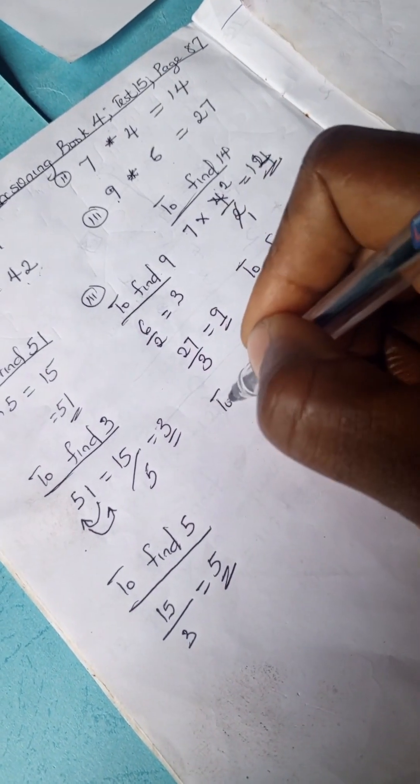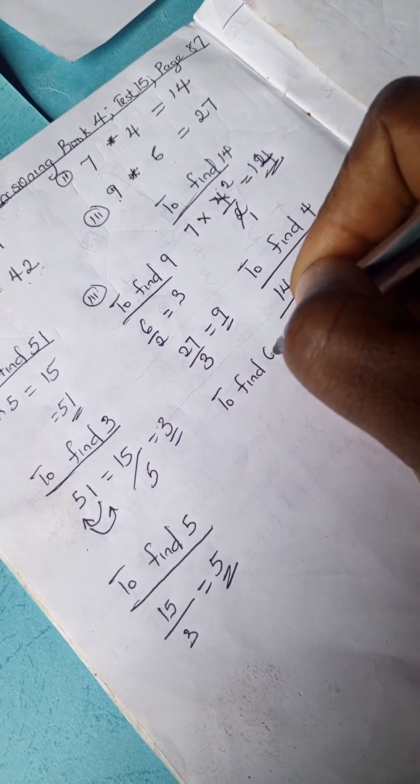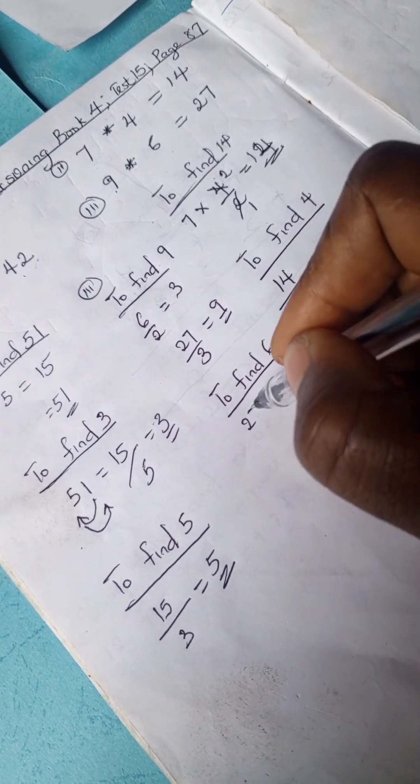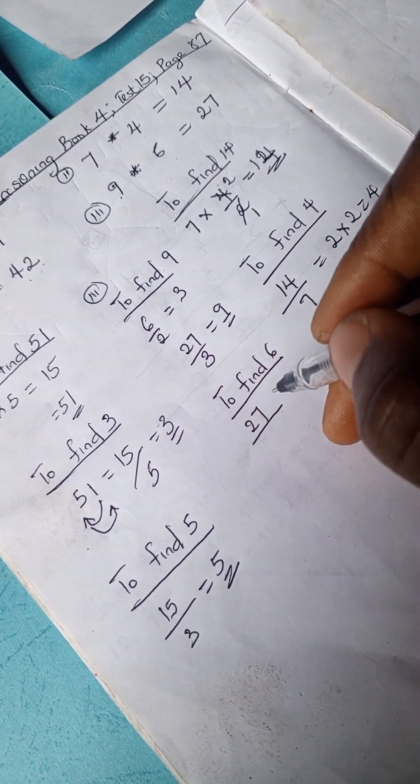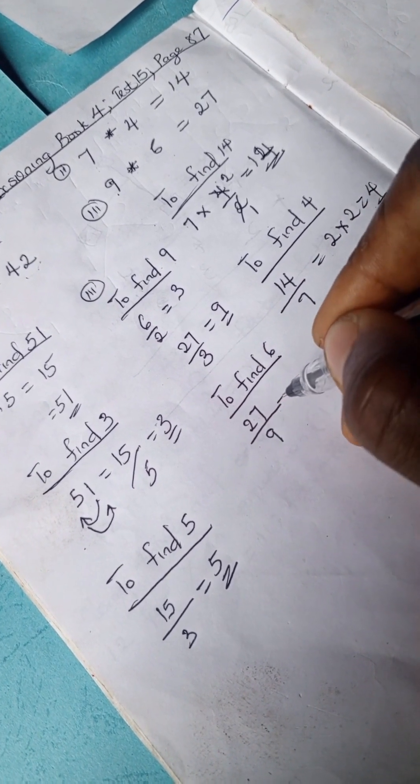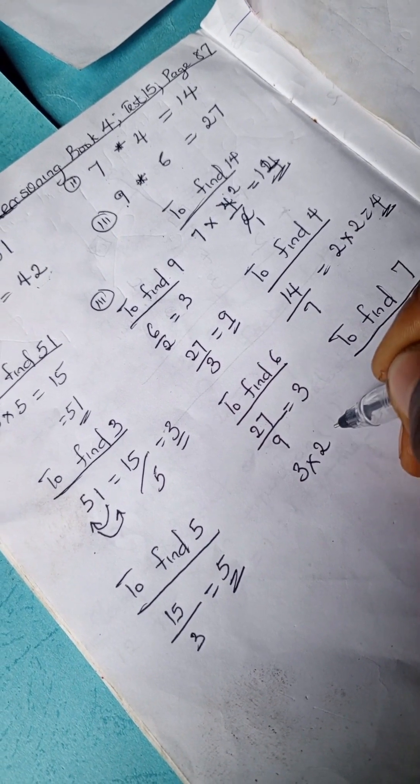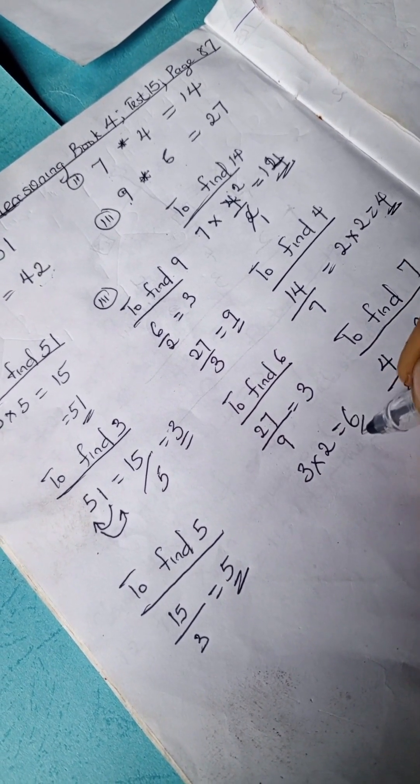To find 6, we can also have 27 divided by 9 is 3, so 3 times 2 is 6.